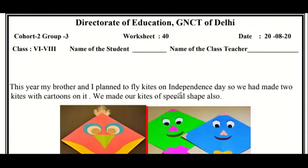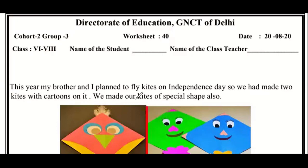Now we are going to look at this worksheet in English. The worksheet is the same, dated the 20th of August. In English it says: This year my brother and I planned to fly kites on Independence Day, so we made two kites with a cartoon on each one. We also made our kites of special shapes.